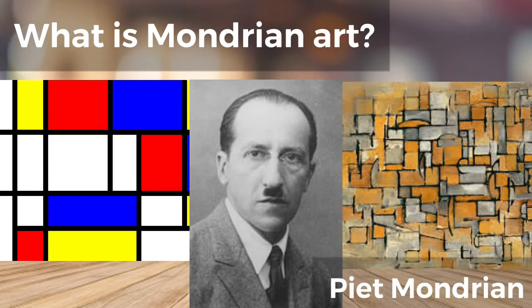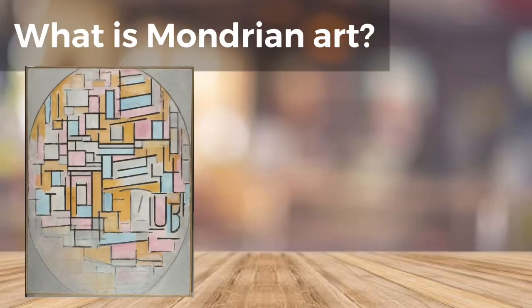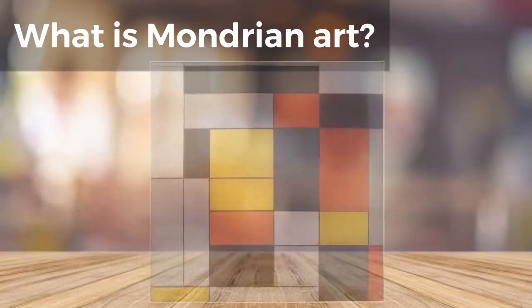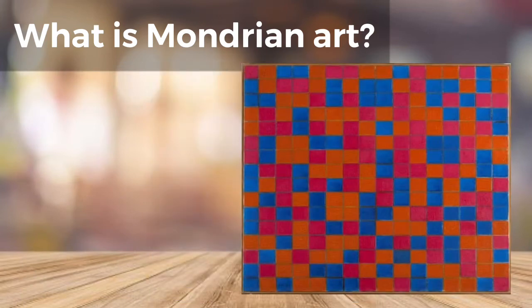Pete Mondrian was a Dutch artist best known for his abstract painting. Abstract refers to the fact that the paintings do not show anything that is recognizable, such as people, objects, landscapes, or animals. Instead, abstract artists use colors, shapes, and textures to achieve their effect.